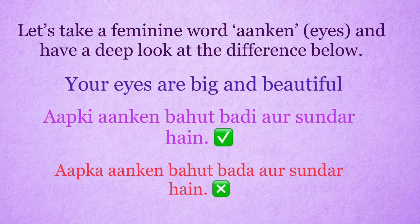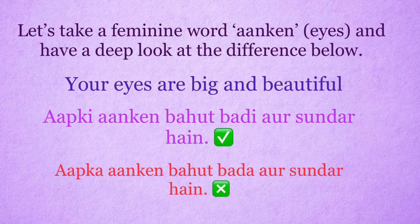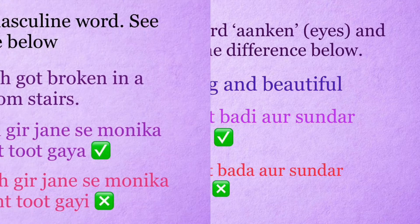Let's take a feminine word, Aankhe, eyes, and have a deep look at the difference below. Your eyes are big and beautiful. Right use would be: Aap ki aankhen bahut badi aur sundar hain. Wrong sentence would be: Aap ki aankhen bahut bada aur sundar hain.